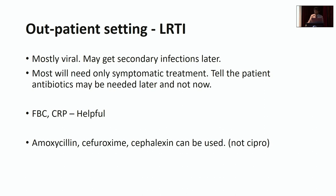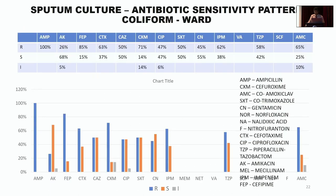Most lower respiratory infection patients will need only symptomatic treatment. A full blood count and CRP can be useful if bacterial infection is suspected in the outpatient setting. When antibiotics are needed, most cases respond to amoxicillin, cefuroxime, or cefalexin — definitely not ciprofloxacin. Inpatient sensitivity data again shows high resistance to many commonly used drugs, reflecting the consequences of ongoing irrational antibiotic use.